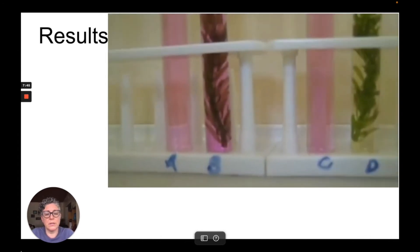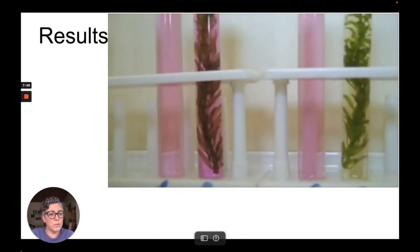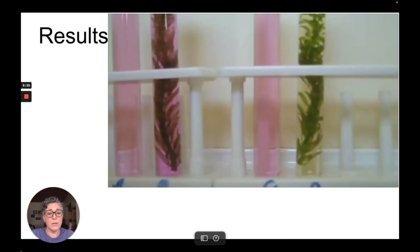Here are the results. The two tubes on the left were in the light. The two tubes on the right were in the dark. We see that tubes A and C had no change. B which was in the light had a darker pink color to the hydrogen carbonate indicator and D which was in the dark, the hydrogen carbonate indicator turned yellow.